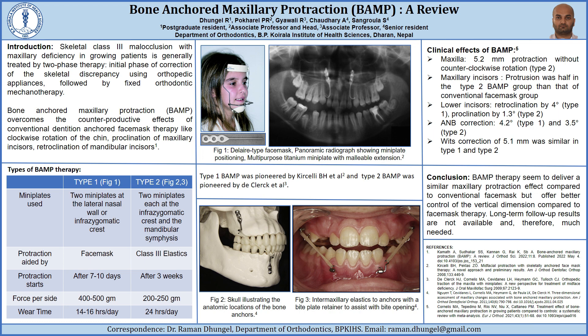An alternative method involves the installation of two miniplates at the infrazygomatic crest bilaterally with the use of a face mask. Type II BAMP therapy involves the installation of four miniplates — two each in the infrazygomatic crest of the maxilla and at the mandibular symphysis. Pre-drilling with a 1.6 mm diameter bore is followed by fixing the miniplates to the bone using 2-3 self-tapping bone screws per side, 2.3 mm in diameter and 5 mm in length. 200-250 grams of force per side is applied for protraction by engaging Class III elastics 24 hours a day, replacing them daily.